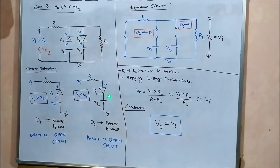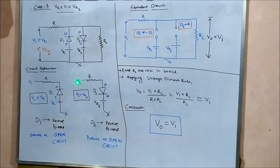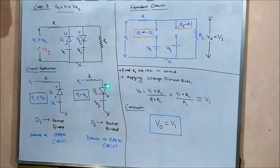For diode D2: the P-end is connected to Vi and the N-end to Vr2. Since the input voltage is lesser than Vr2, the reference voltage Vr2 is greater than Vi. So the higher potential Vr2 is connected to the N-type end and the lower potential Vi to the P-type end. Therefore D2 is also reverse biased and behaves as an open circuit. In case three, both diodes are reverse biased and open circuited.